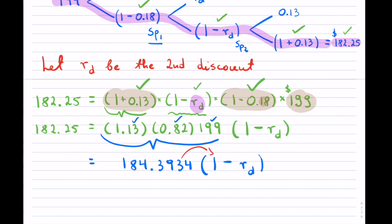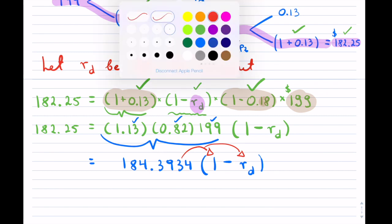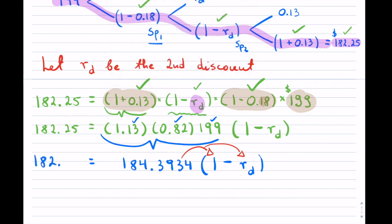So this now simplifies all of that junk into one number, which now indeed I can bring inside the bracket. So I can distribute this across these two terms so that I don't have a bracket anymore. Now, don't forget, I didn't lose this 182.25 on the left hand side.